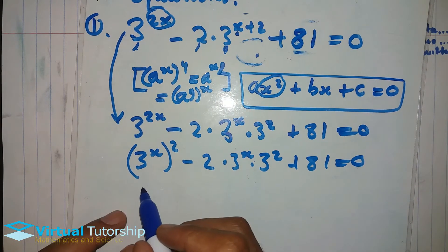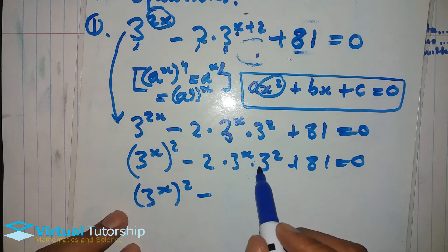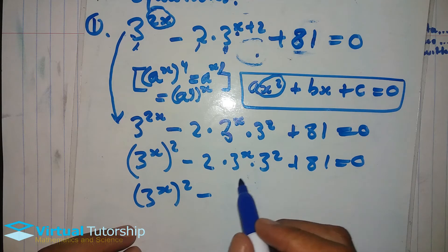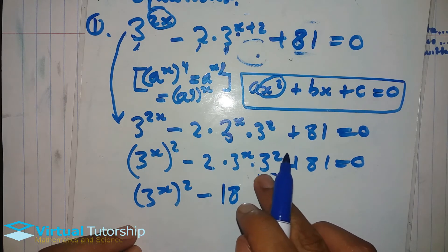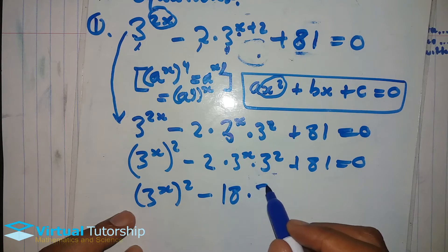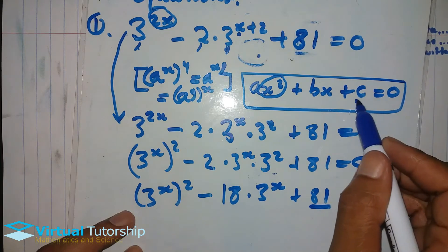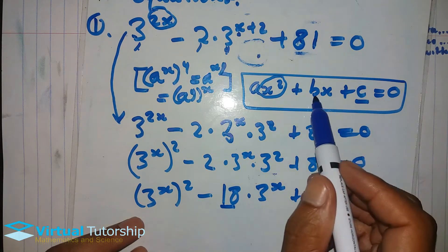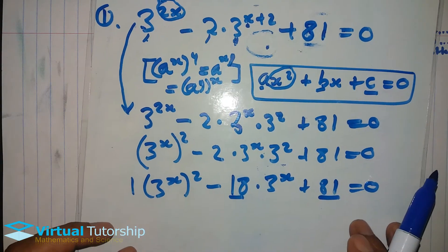So we rewrite it as such. This minus gives us: 9 times 2 is 18, so it becomes minus 18 times 3 exponent x, plus 81, equal to zero. The 81 is the same value as C in a quadratic extended form. This 18 is the same as B, and there's a coefficient of 1, which is the same as A.